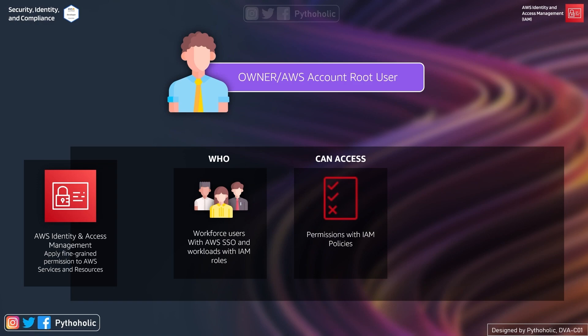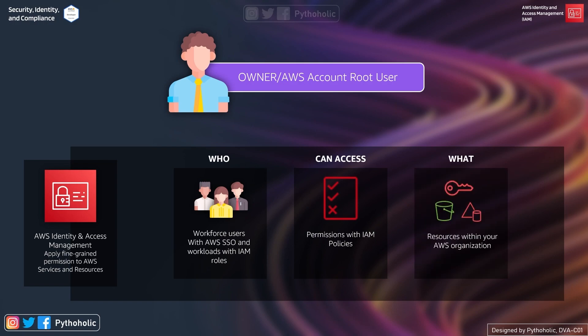The 'can access' part defines the policies, which provide permissions defined in your IAM policies. The 'what' part is your resources within your AWS organization. AWS states that with IAM you define who can access what by specifying fine-grained permissions, and IAM then enforces those permissions for every request. One of the basic ideas of IAM is that access is denied by default and is granted only when permissions specify an allow statement.